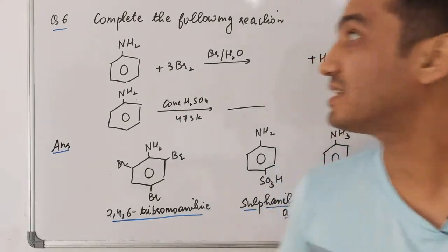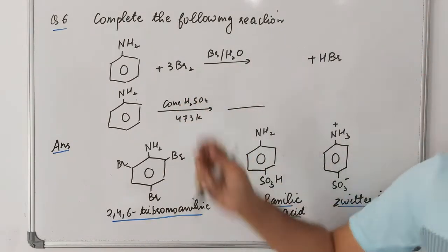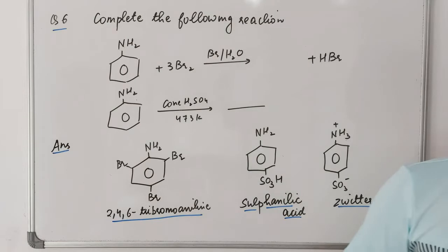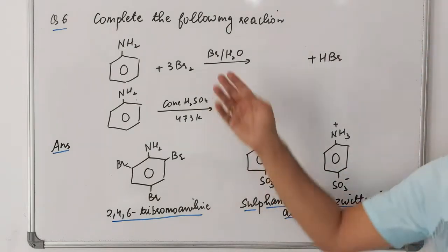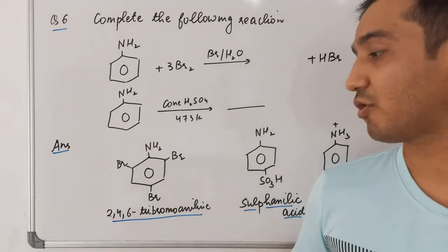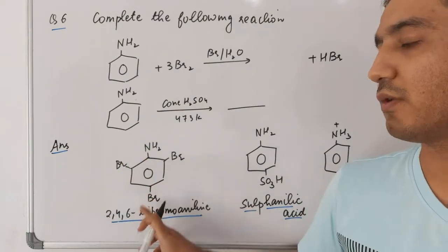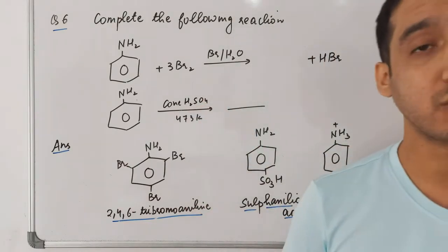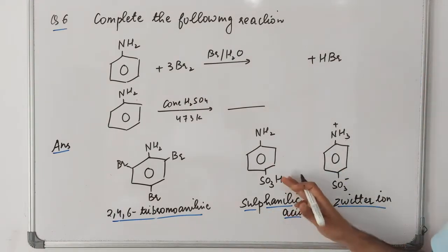Question six: complete the following reactions. When aniline reacts with bromine water, the NH₂ group is a strong activating group. Bromine gets attached at the ortho and para positions, resulting in the formation of 2,4,6-tribromoaniline. For the second reaction, aniline with concentrated H₂SO₄ at 473 K results in formation of sulfanilic acid.